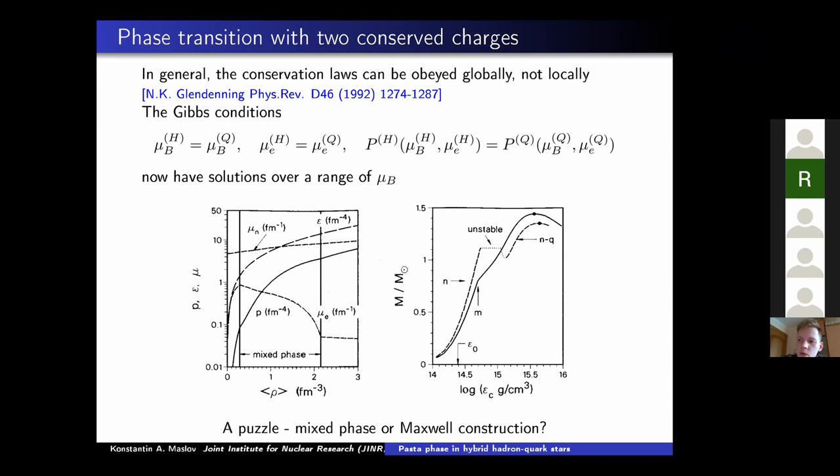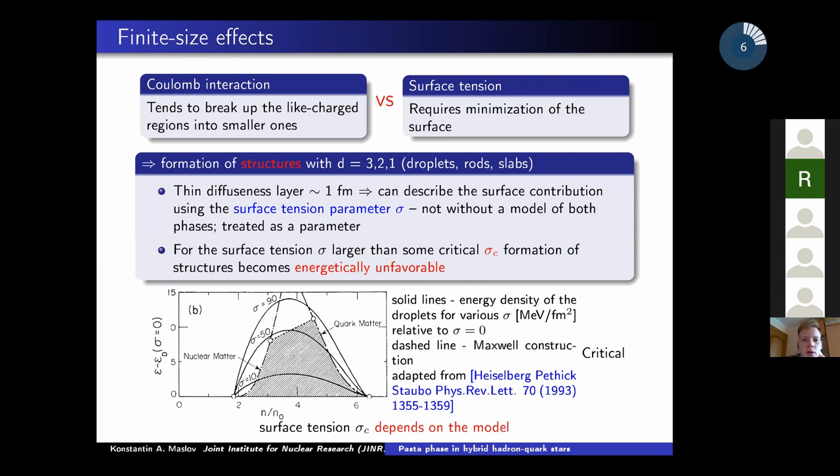But unfortunately, the Maxwell construction leaves us with the two phases with different charge densities. And as was noted, the conservation laws are to be obeyed globally. And one has to solve the set of chemical equilibrium conditions and mechanical equilibrium conditions for the pressure, also including the charge chemical potential, which leads to the mixed phase spanning across a wide range of densities. For some time, it was a question or a puzzle, which construction one should use.